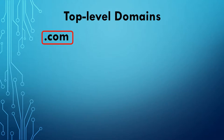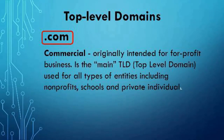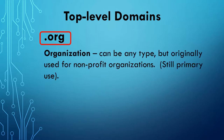The dot com top-level domain was originally intended for for-profit businesses, but it is now used for all types of entities, including non-profits, schools, and private names. Next we have dot org, or organization. Organizations can be any type, but dot org was originally used for non-profits and that is still its primary use.